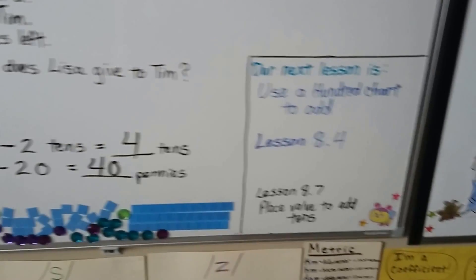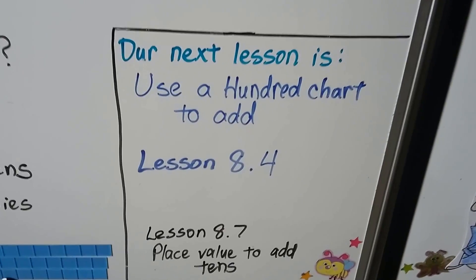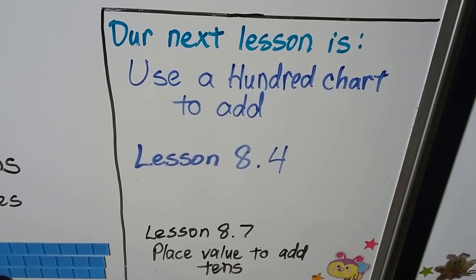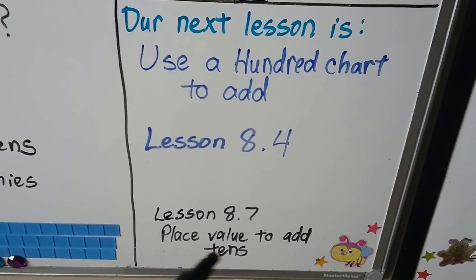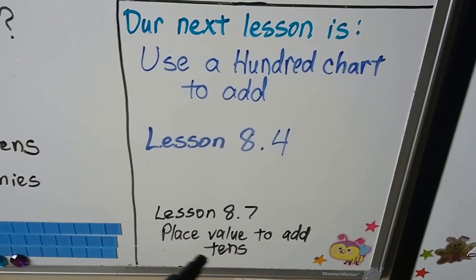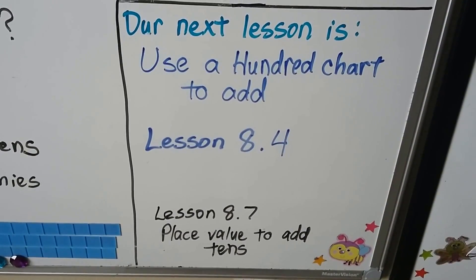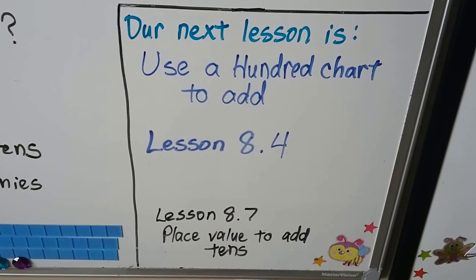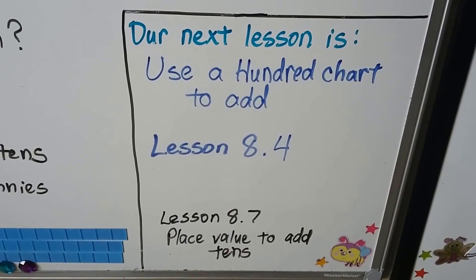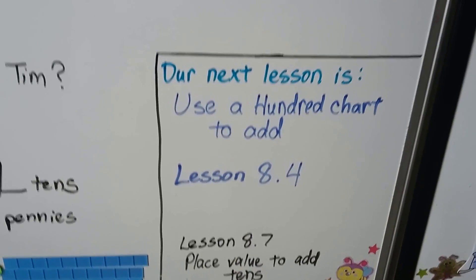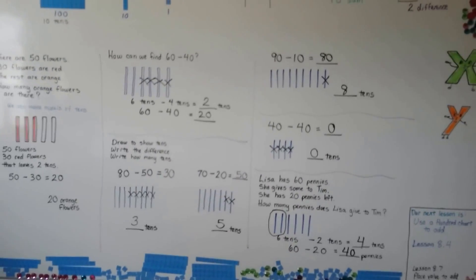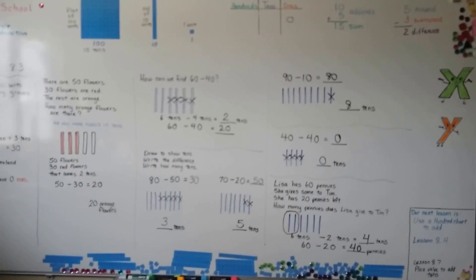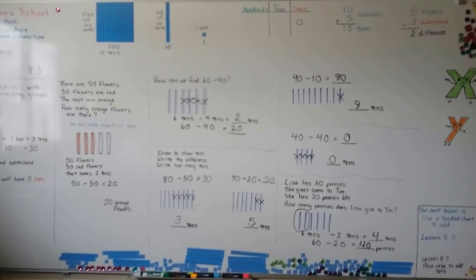Our next lesson is using a hundred chart to add — that's lesson 8.4. In lesson 8.7 we're going to be adding with place values with tens and ones; that's a few lessons away. Keep practicing adding and subtracting tens. I'm proud of you and I'll see you next time. Bye.